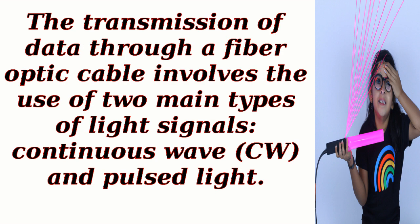The transmission of data through a fiber optic cable involves the use of two main types of light signals: continuous wave (CW) and pulsed light.